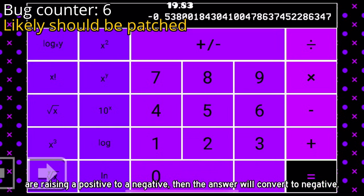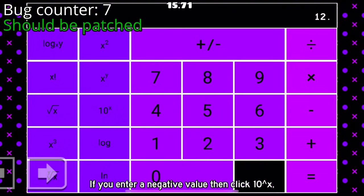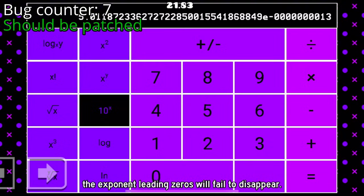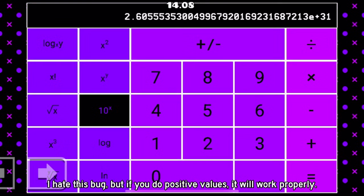If you enter a negative value then click 10 to the power of x, the exponent leading zeros will fail to disappear. I hate this bug, but if you do positive values, it will work properly.